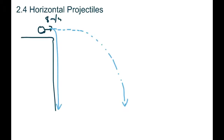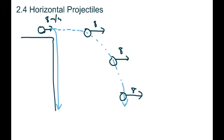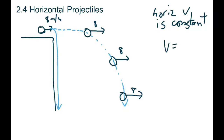One thing you have to be careful of is that the speed of 8 meters per second horizontally stays constant. We've got nothing slowing that ball down once it's in midair — other than wind resistance, which we'll ignore. There's nothing causing that ball to stop until it hits the ground. So that 8 meters per second is going to stay exactly the same all the way through. Because horizontal velocity is constant, we can just use the easy velocity equals distance over time formula.